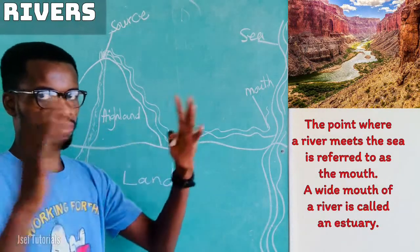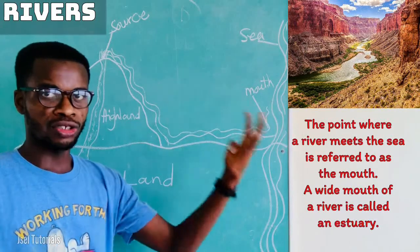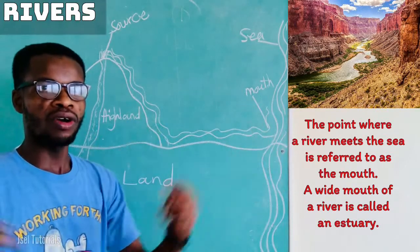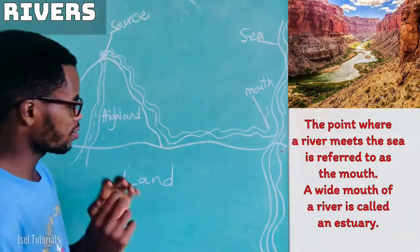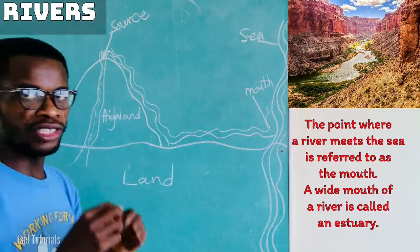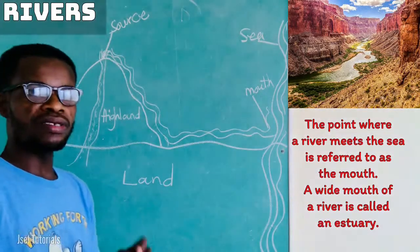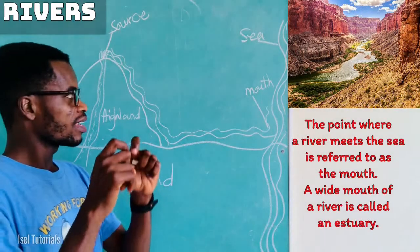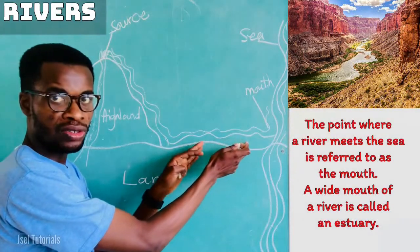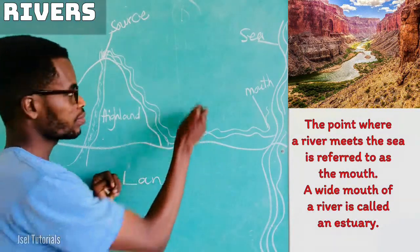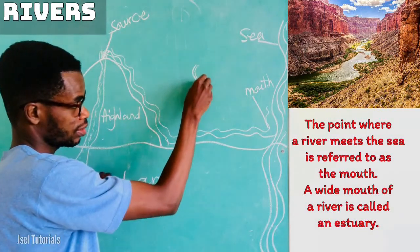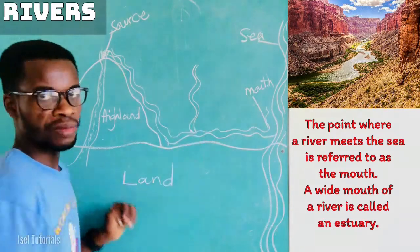When the mouth is broad, we call it an estuary. An estuary is a broad or wide mouth of a river. Now let's come to other features. If it happens that a smaller river joins the main one — the main one is on the lowland — I'll indicate it here with two crooked lines to show a smaller river joining this main one. You should be able to draw this on a drawing sheet or an A4 plain sheet.